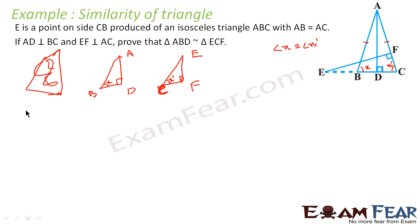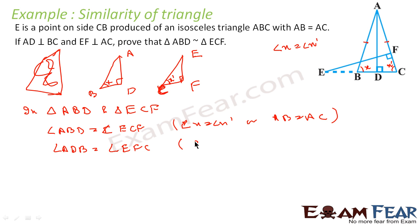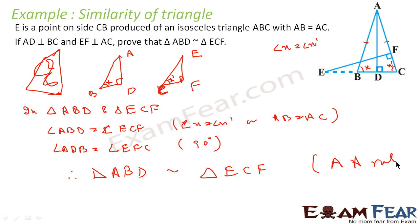Now let's write in the systematic way for the examination. In triangle ABD and triangle ECF: first, angle ABD equals angle ECF, that is angle B equals angle C — because AB equals AC. Second, angle ADB equals angle EFC, both are 90 degrees. Since two angles are the same in these triangles, triangle ABD is similar to triangle ECF by AA rule.